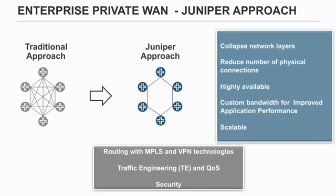For example, you can improve the user experience of a video broadcast stream by prioritizing and steering it across least congested paths to different locations over the MPLS transport. The traditional private WAN infrastructure typically requires dedicated links and does not scale well. Legacy technologies and devices make it difficult to realize an acceptable user experience or optimal application performance.